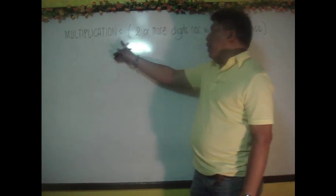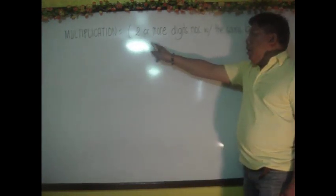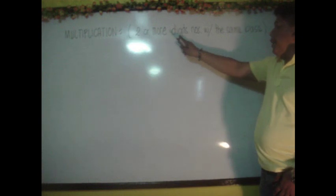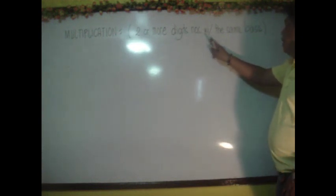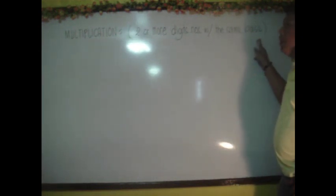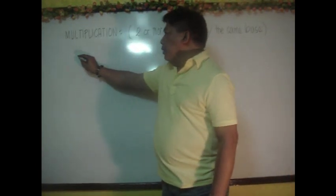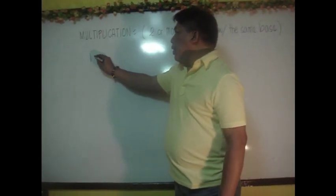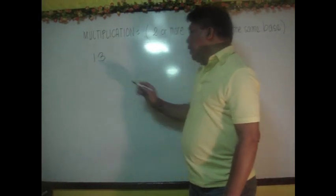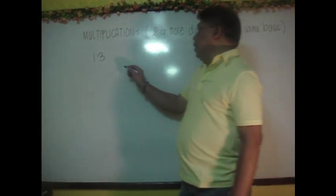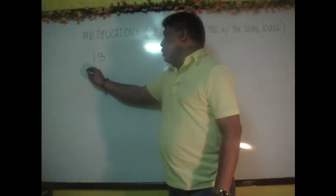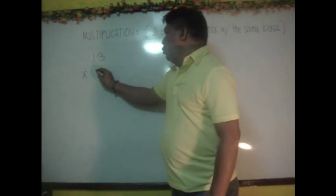This is multiplication of two or more digit numbers with the same base or base number. We have an example. Example 1. For example, we have 13 times 12.